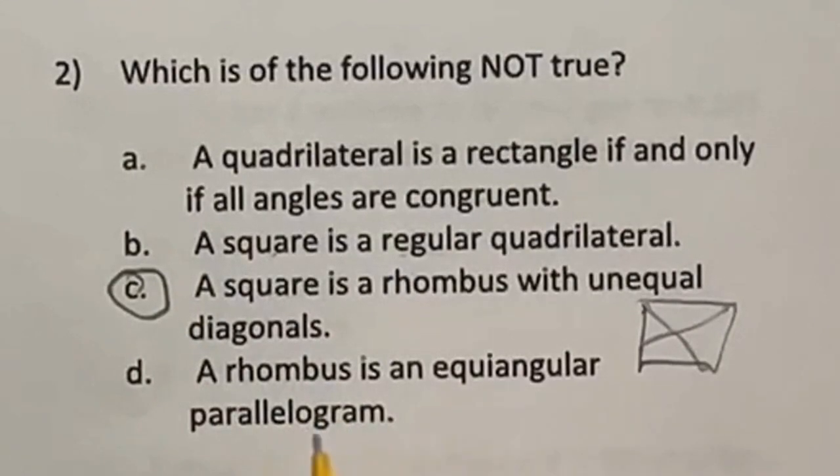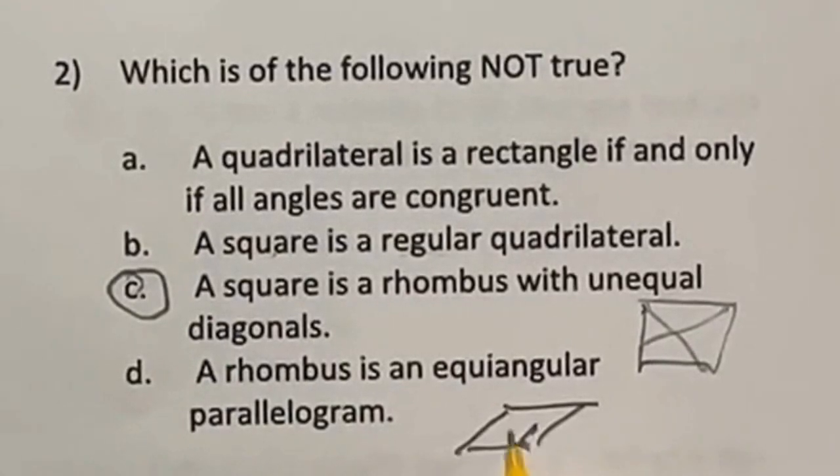Last one. A rhombus is an equal angular parallelogram. Well, actually, two of the angles will be the same in a rhombus, like this guy and this guy, but that guy and that guy will not be the same as the other two. So that's actually not true either unless they're just talking about across from each other. So C and D?